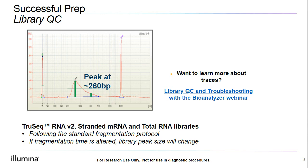If we're following the standard fragmentation protocol, we expect to see a smooth, almost bell-shaped curve with a peak at around 260 to 300 base pairs with our TrueSeq RNA libraries. Depending on your experimental question, there are options to adjust the fragmentation time. Adjusting fragmentation times will shift our library peak size. We can extend the fragment size and get a longer read length depending on our purposes. Smaller fragments will shift the peak to the left, and larger fragments will shift the peak to the right.